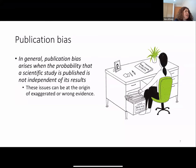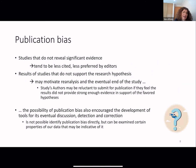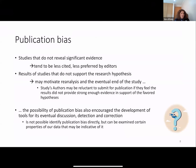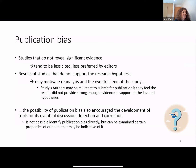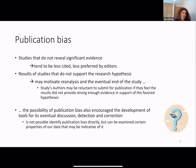Publication bias arises when the probability that a scientific study is published is not independent of its results. This issue can be at the origin of exaggerated or wrong evidence. Studies that do not reveal significant evidence tend to be less cited and less preferred by editors. Results that do not support the research hypothesis may motivate re-analysis and the eventual end of the study. Study authors may be reluctant to submit for publication if they feel the results did not provide strong enough evidence in support of the favoured hypothesis.